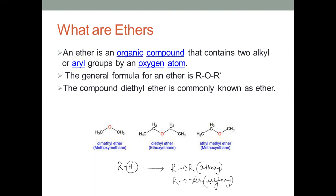Ethers are organic compounds having an alkyl group linked to an oxygen atom. They are generally represented as R-O-R'. Examples include dimethyl ether — two methyl groups attached to an oxygen atom — and diethyl ether, which is ethyl-methyl ether. Ethers can be symmetrical or unsymmetrical.